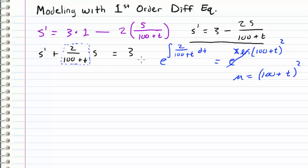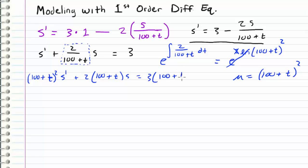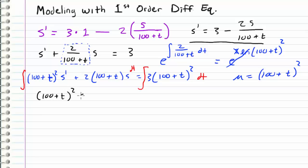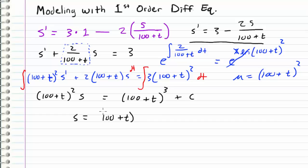Multiplying the entire differential equation through by mu, we get (100 + t)² s prime plus 2(100 + t)s equals 3(100 + t)². Integrating both sides with respect to t, the left side becomes (100 + t)² times s, and the right side integrates to (100 + t)³ plus C. Dividing both sides by (100 + t)², we get s equals (100 + t) plus C divided by (100 + t)².